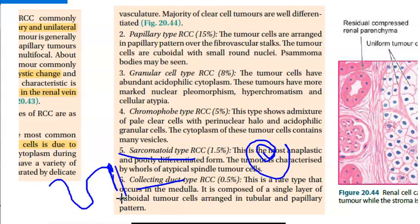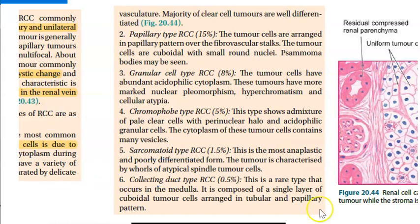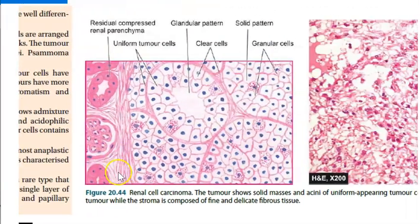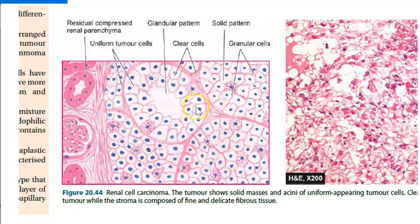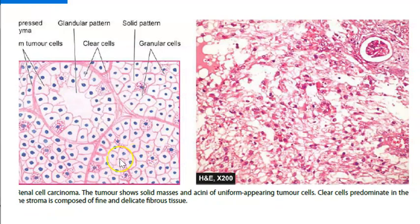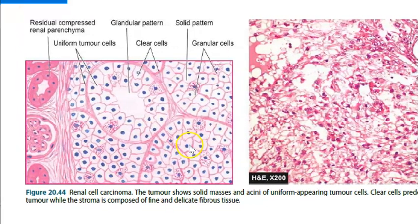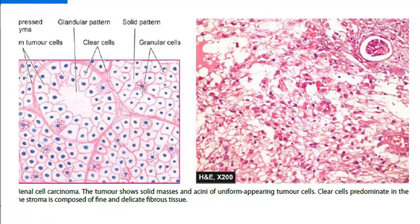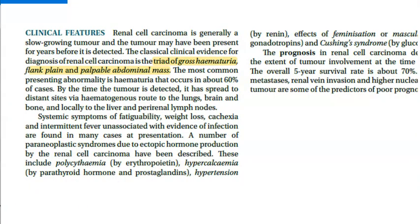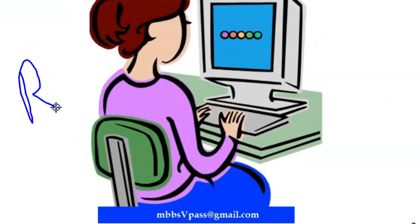The collecting duct type is a rare variety that occurs in the medulla of the kidney - the middle part. The clear cell type predominates in the tumor while the stroma is composed of fine and delicate fibrous tissue.